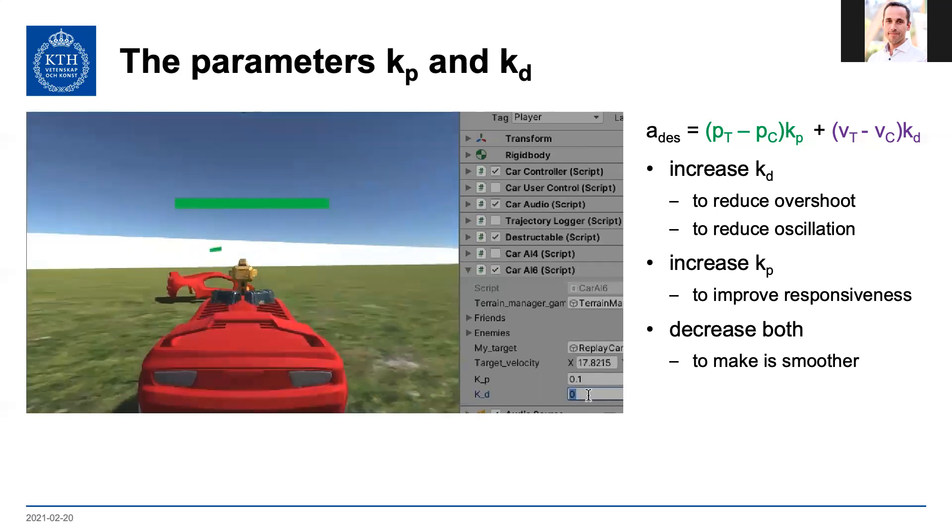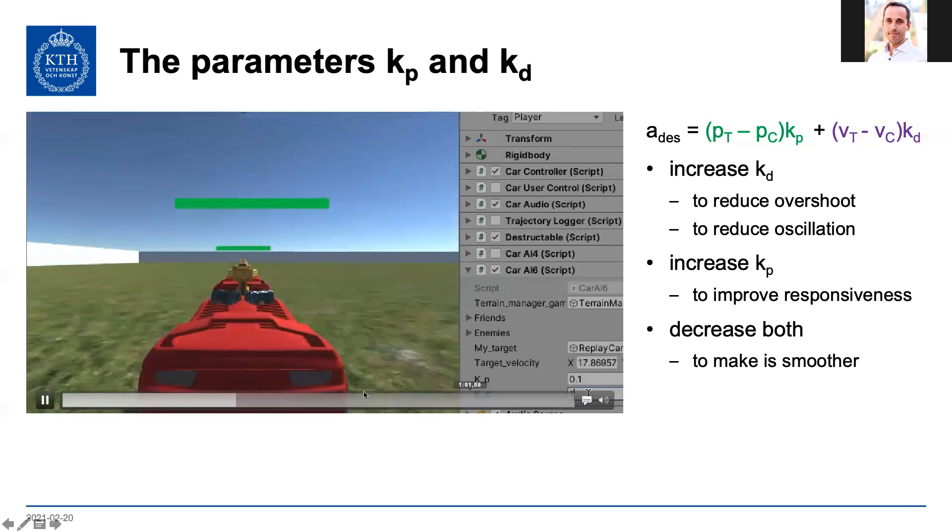So now we're going to set and bump up kd to one, and the oscillation just disappeared.